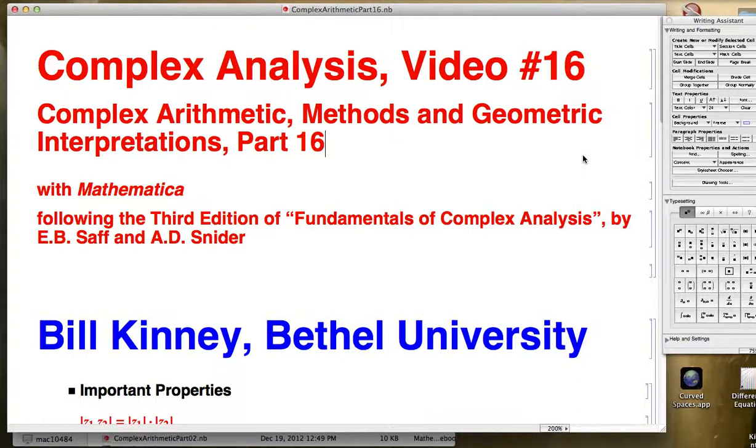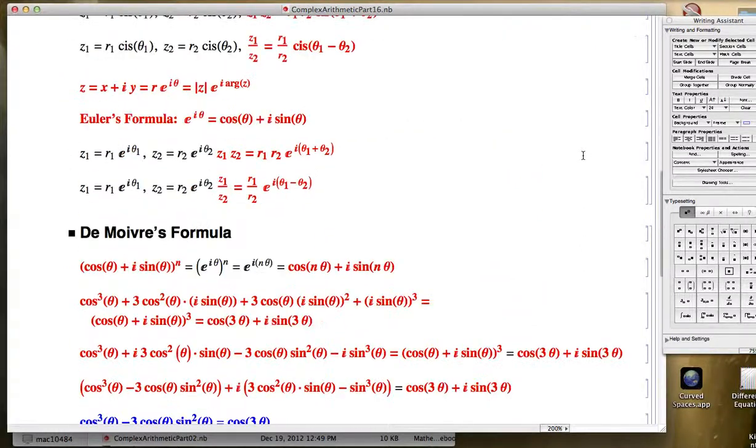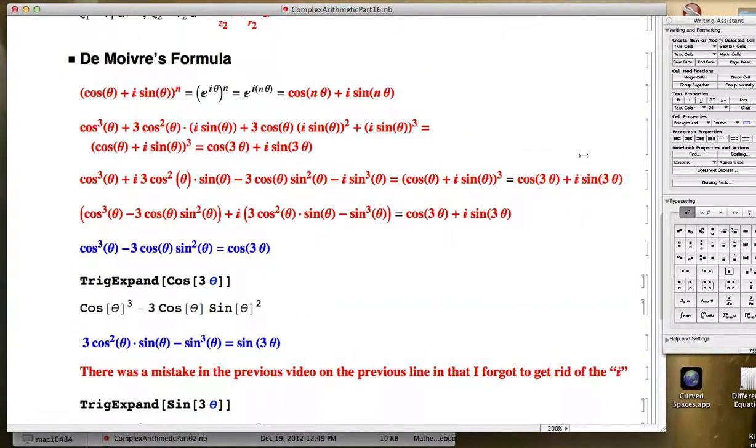This is the 16th video in a series about complex arithmetic methods and geometric interpretations. In the last video, we looked at de Moivre's formula, which says that cosine theta plus i sine theta to the n power equals cosine n theta plus i sine n theta. And then we applied that to deriving a couple of trigonometric identities, this one and this one, by looking at the real and the imaginary parts of an expanded form of cosine theta plus i sine theta all raised to the n power.